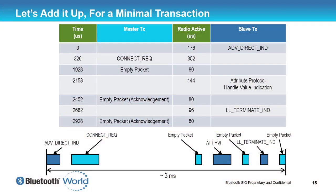In response to the empty packet, the slave comes along with a handle value notification — it's an attribute protocol packet. That's a very, very small packet, 144 microseconds. Then we have an acknowledgement packet back from the master. The slave then gracefully terminates by sending a link layer termination indication, and then you get an empty packet. That whole transaction is done in approximately three milliseconds.